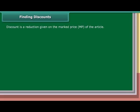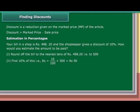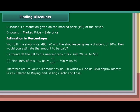Finding Discounts: Discount is a reduction given on the market price (MP) of an article. For example, a bill of Rs. 498.20 with a discount of 10%: round off the bill to the nearest tens, that is Rs. 500. Find 10% of this, which is Rs. 10 upon 100 into 500, equal to Rs. 50. Therefore, reduce your bill amount by Rs. 50, which will be approximately Rs. 450.